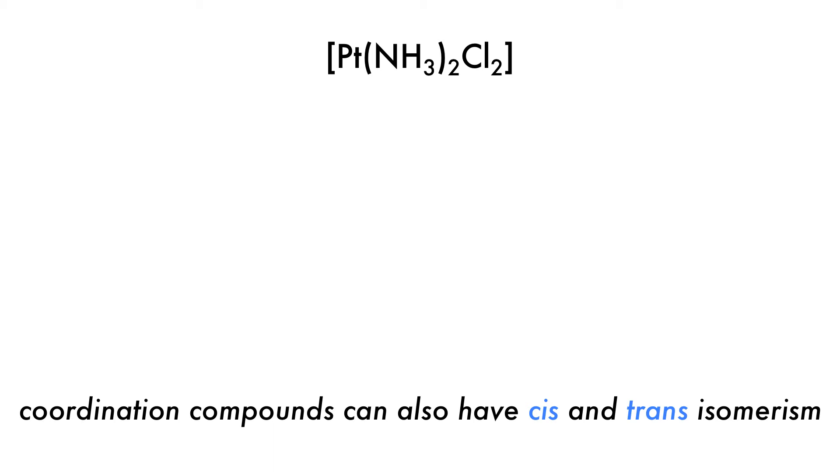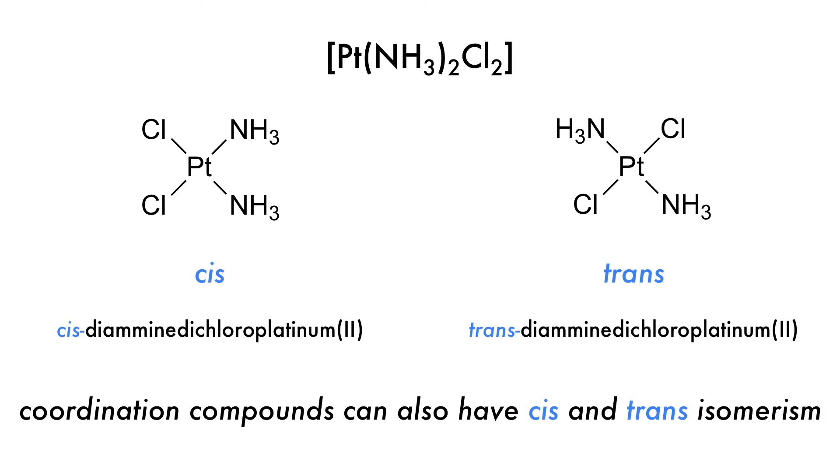Coordination complexes can also have cis and trans isomerism, which can be expressed in the compound's name. Diamine dichloro-platinum-2 is a neutral complex. It has two isomers, cis and trans, which we can write as a prefix for the compound's name. The cis isomer is also known as cisplatin, an important anti-cancer drug.